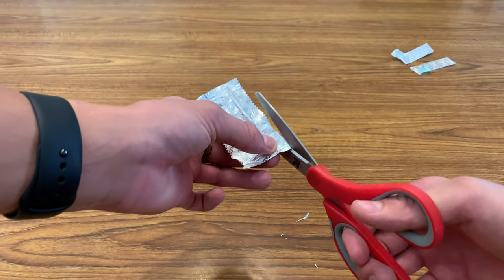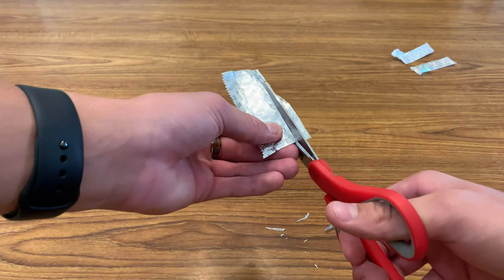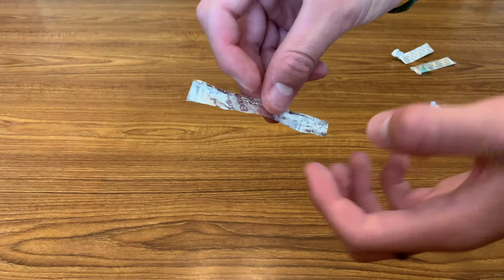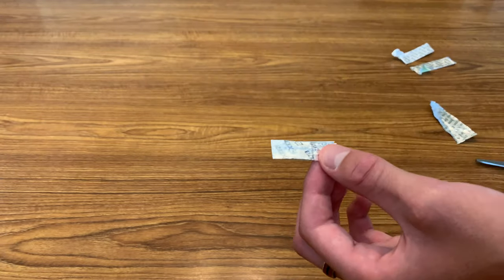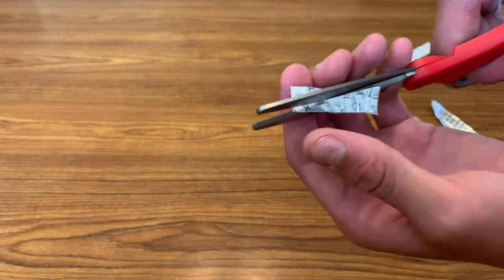Then cut off the serrated edge of the wrapper with a pair of scissors and make another cut about a centimeter in. Then fold the slip in half with the metallic side facing outwards and cut from the bottom corner to the opposite side on the top,